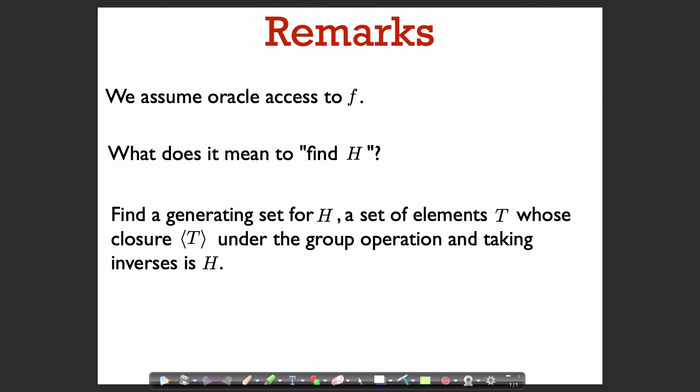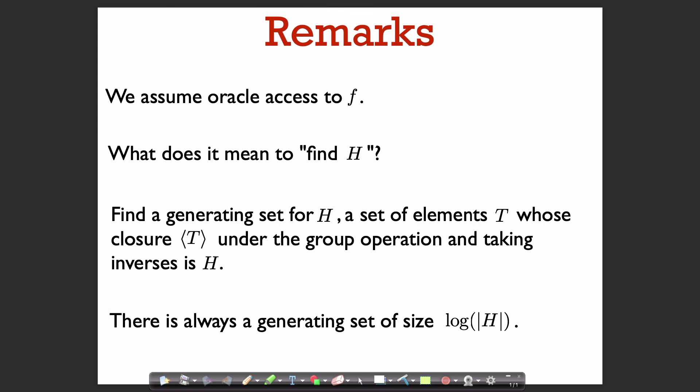We assume oracle access to f, and by finding H we mean finding a generating set — a set of elements whose closure under the group operation and taking inverses is H itself. This is not too demanding an ask, because any group G of size n always has a generating set of size at most log n. So we can always have a generating set of size at most log|H| for H, making this a reasonable output condition.